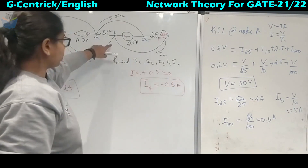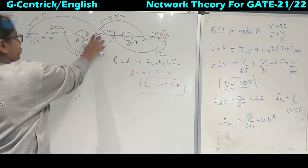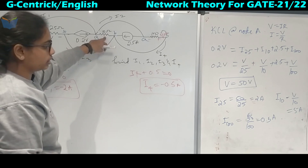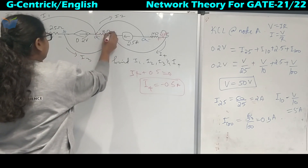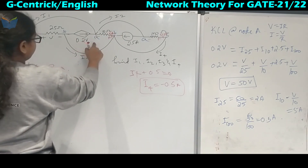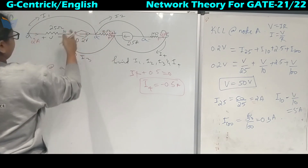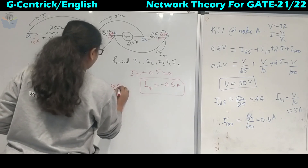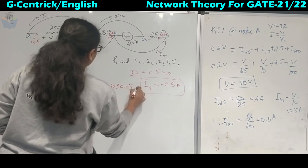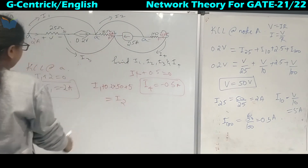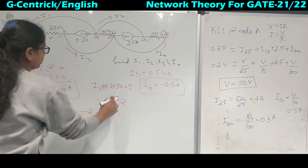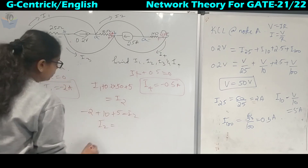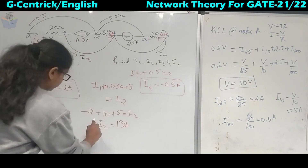Now calculating I2: applying KCL at that node, which has 4 branches. The 10-ohm resistor carries 5 amperes. Identifying incoming and outgoing currents: I1 and 0.2V (= 0.2 × 50 = 10) and 5 amperes are incoming, and I2 is outgoing. So I2 = I1 + 10 + 5 = −2 + 10 + 5 = 13 amperes.